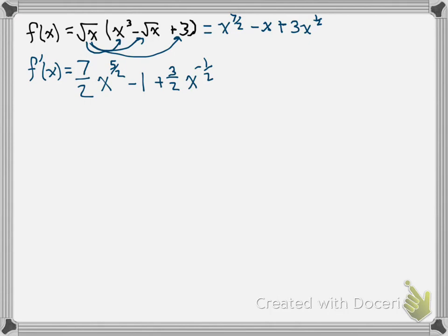Now you can put your answer in like this, but if you wanted to simplify, we could write 7 halves square root of x to the 5th minus 1. And then here, because of the negative exponent, it's going to go into the denominator, 3 over 2 square root of x. And there's our derivative.